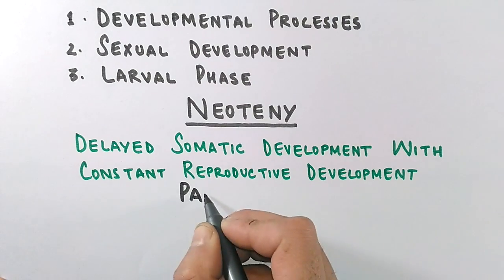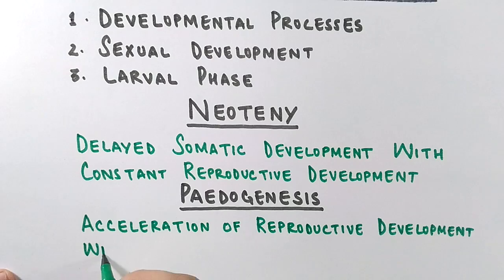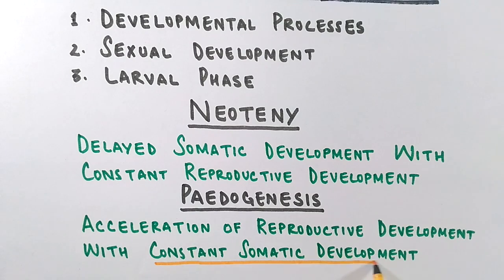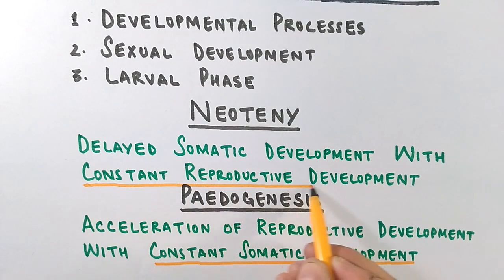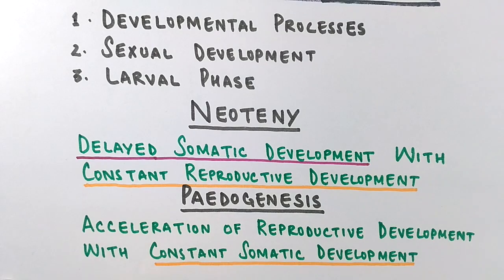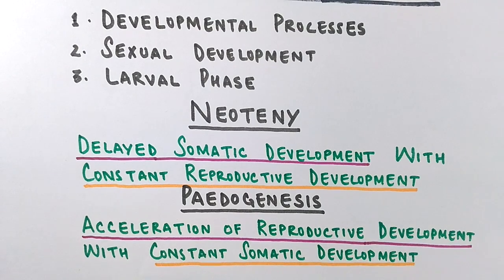Now let's look at pedogenesis — it's just the reversal of neoteny. Pedogenesis is the acceleration of reproductive development with constant somatic development. Both the reproductive organs and germ cells are accelerated, while the remaining somatic development proceeds at a constant pace. Comparing the two: in pedogenesis, somatic development is constant, whereas in neoteny, reproductive development is constant. In neoteny, somatic development is delayed; in pedogenesis, reproductive development is accelerated.